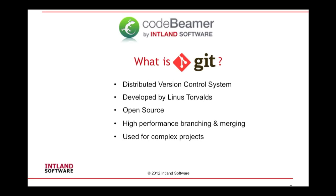First of all, what is Git? Git is a distributed version control system. This means that to work with Git, you don't necessarily have to have a fast network connection. As you can clone your repository to your local machine, you are widely independent from any online connection — just do your changes locally and when you are back online, you can commit them to the central repository. Git was developed by Linus Torvalds as an open source project and has high performance for branching and merging, and is widely used for complex projects.